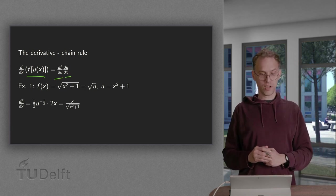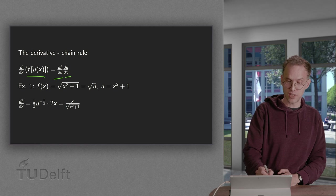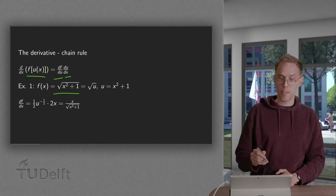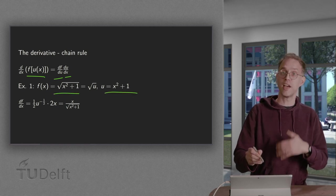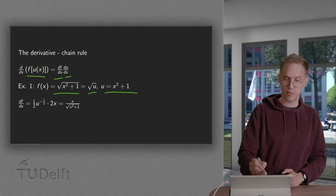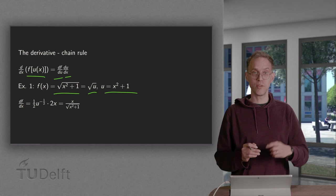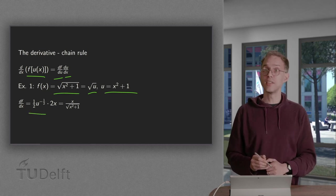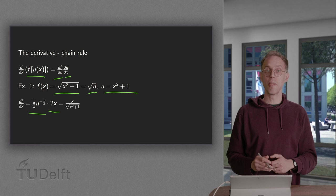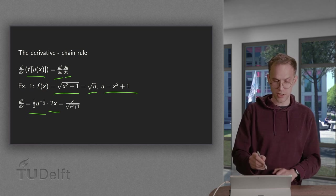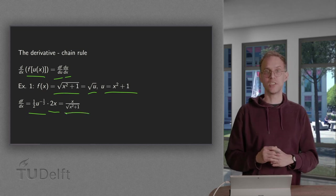So how does this work? If you have for example as function the square root of x squared plus 1, then your u equals x squared plus 1 and your function is basically f(u) equals the square root of u. So if you compute its derivative you get df/du over here times du/dx over here and then you can rewrite and simplify a bit to get this expression.